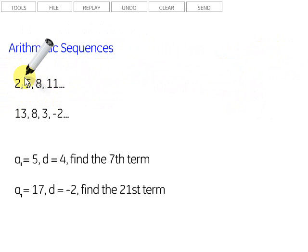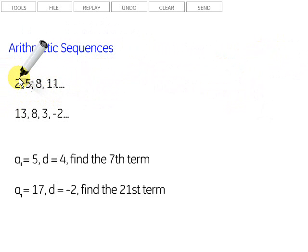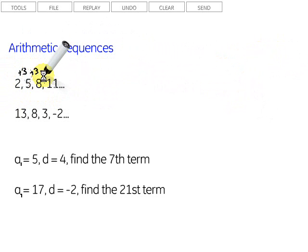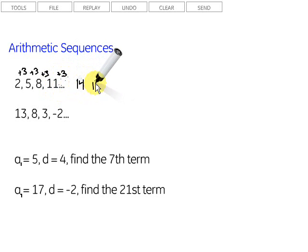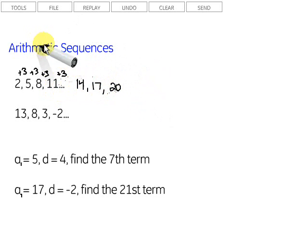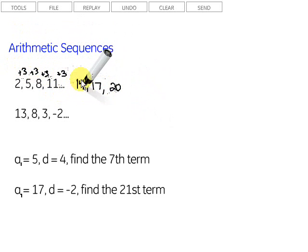Looking at this first sequence: 2, 5, 8, 11. How do we get from 2 to 5? We add 3. From 5 to 8? We add 3. From 8 to 11? We add 3. So if we're asked to get additional terms following 11, we simply add 3. Our next term would be 14, then 17, then 20, and so forth. That's an arithmetic sequence because we're adding the same thing to go from one term to the next.